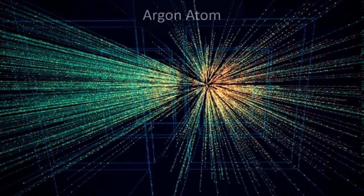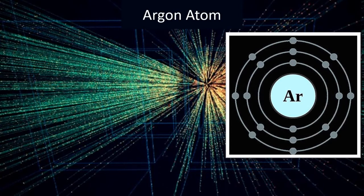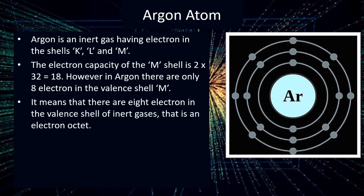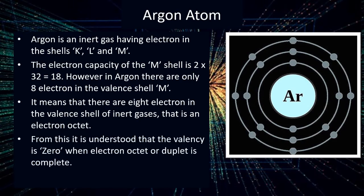Let us take a look at the argon atom. Argon atom has eighteen electrons. The first two electrons are fitted in the K shell. Since the capacity of L shell is eight, the next eight are fitted in L shell. The remaining eight electrons are fitted in M shell. So the electronic configuration of argon is 2,8,8. The M shell has a capacity of 18 electrons, however only eight electrons are fitted in M shell, meaning there are eight electrons in the outermost shell. This is also an electron octet, since eight electrons are fitted in the valence shell.